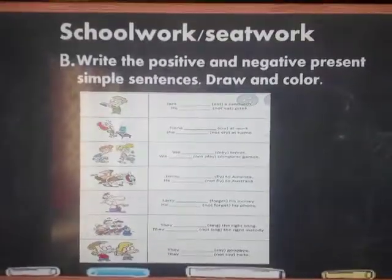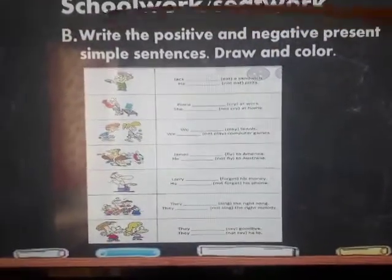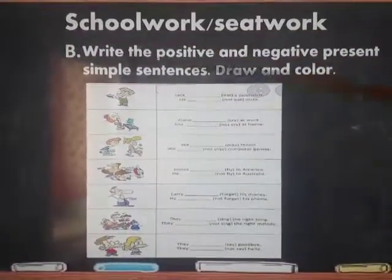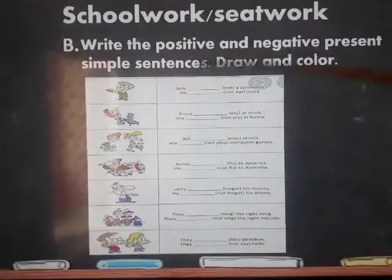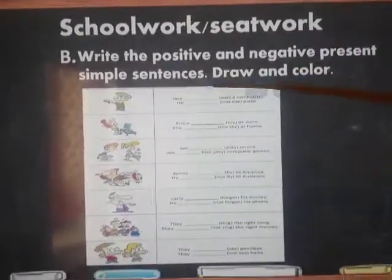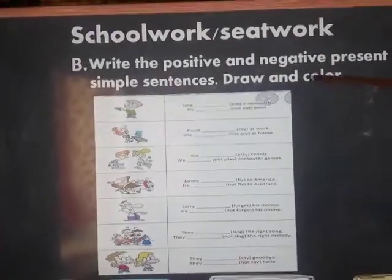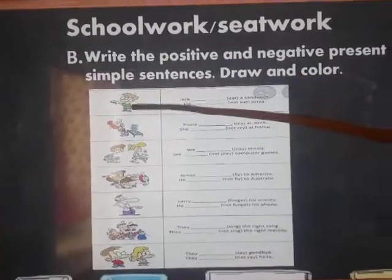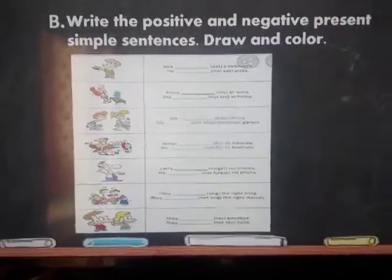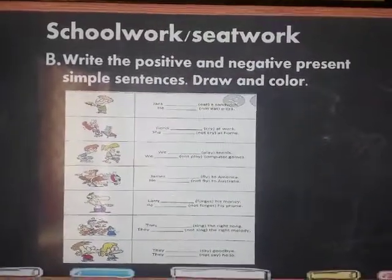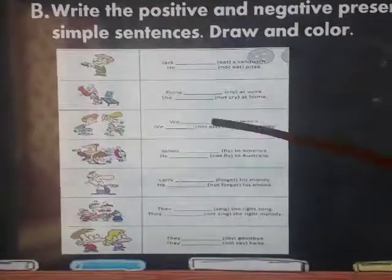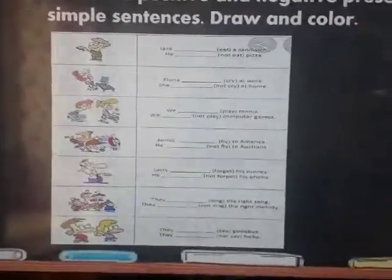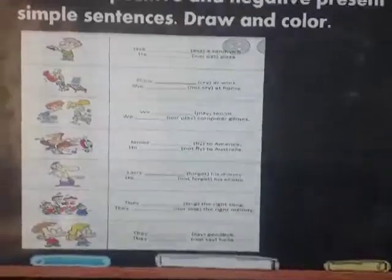School work B: write the positive and negative present simple sentences again. Draw and color again. You have to draw the pictures shown in your school work notebook and write the sentences as well. Same instructions — draw and color.